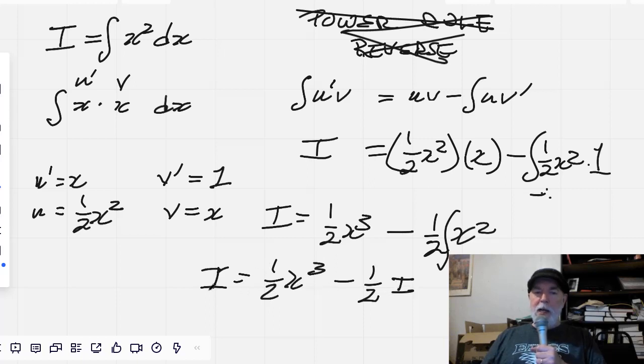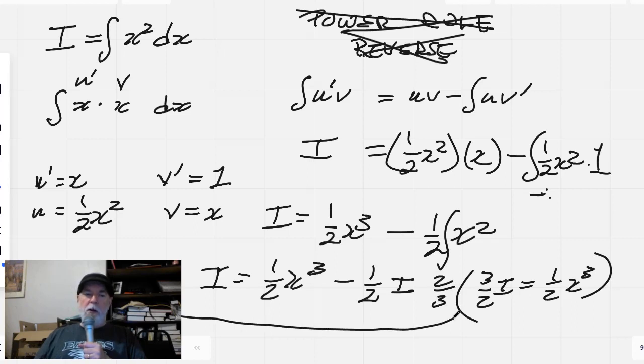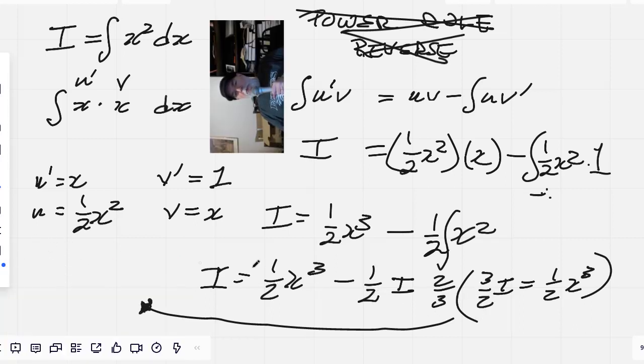So that must mean that three halves of I equals one half x cubed. So we'll multiply everything here by two thirds. And then bring it over here. So you can follow my convoluted logic. We end up with two thirds times three halves. That's just I. I equals three halves. Sorry, two thirds times a half. That's going to be one third x cubed. And that deserves a nice little square. And bob's your uncle!